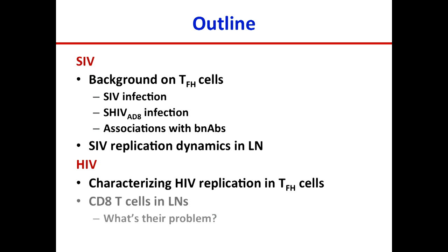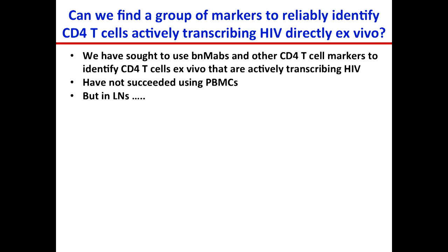Now let me move on to HIV infection and a story that Joe Casaza, a staff clinician in my group, has been working on for a few years to characterize HIV replication in T follicular helper cells. He wanted to know: can we identify a group of markers to reliably identify CD4 T cells that are actively transcribing HIV directly ex vivo? He sought to use broadly neutralizing monoclonal antibodies and other CD4 T cell markers to identify these cells, and he failed miserably in PBMCs. However, when we started looking at lymph nodes, that's when he started to have success.